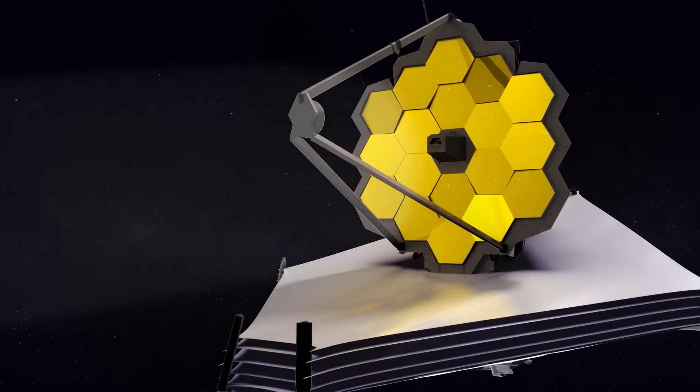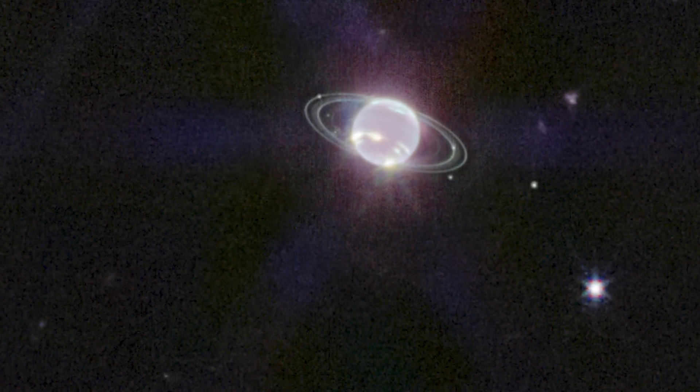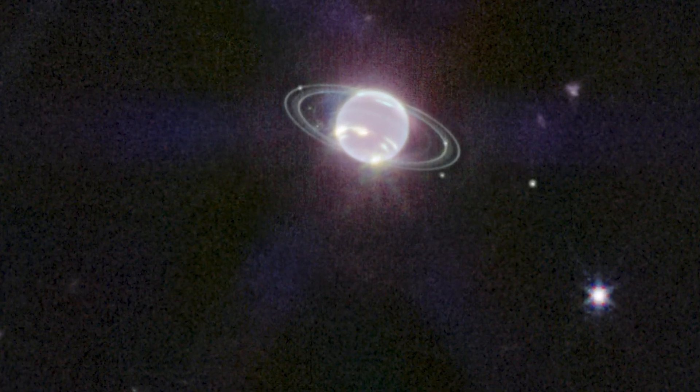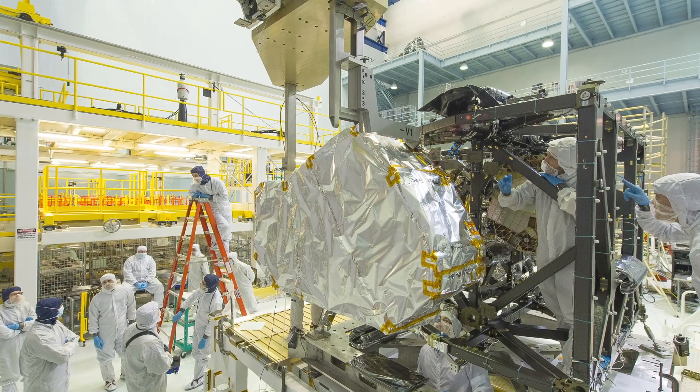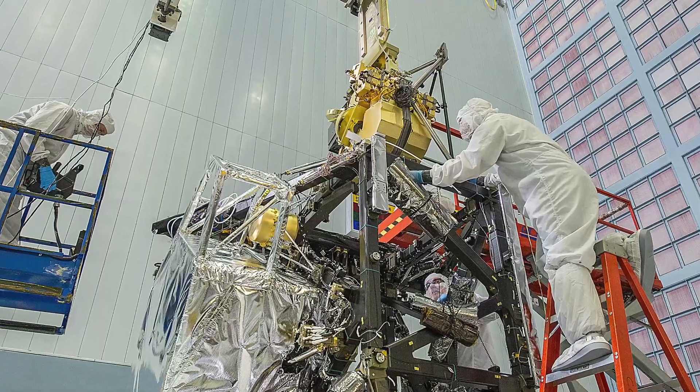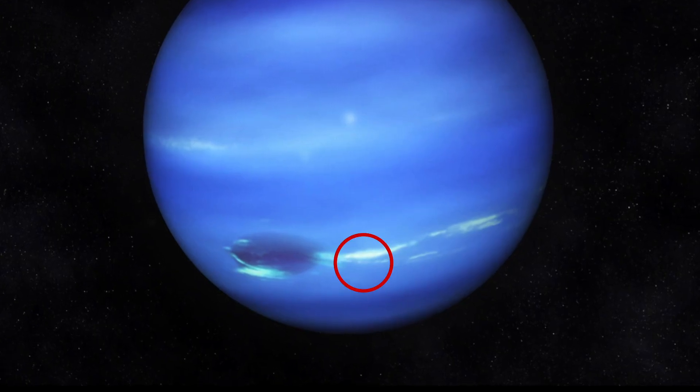When observed through the James Webb Telescope, Neptune appeared as a brilliant crystal ball with ghostly rings encircling it. This is because the James Webb Telescope captures photos in the near-infrared region, which are reflected by clouds high in Neptune's atmosphere.